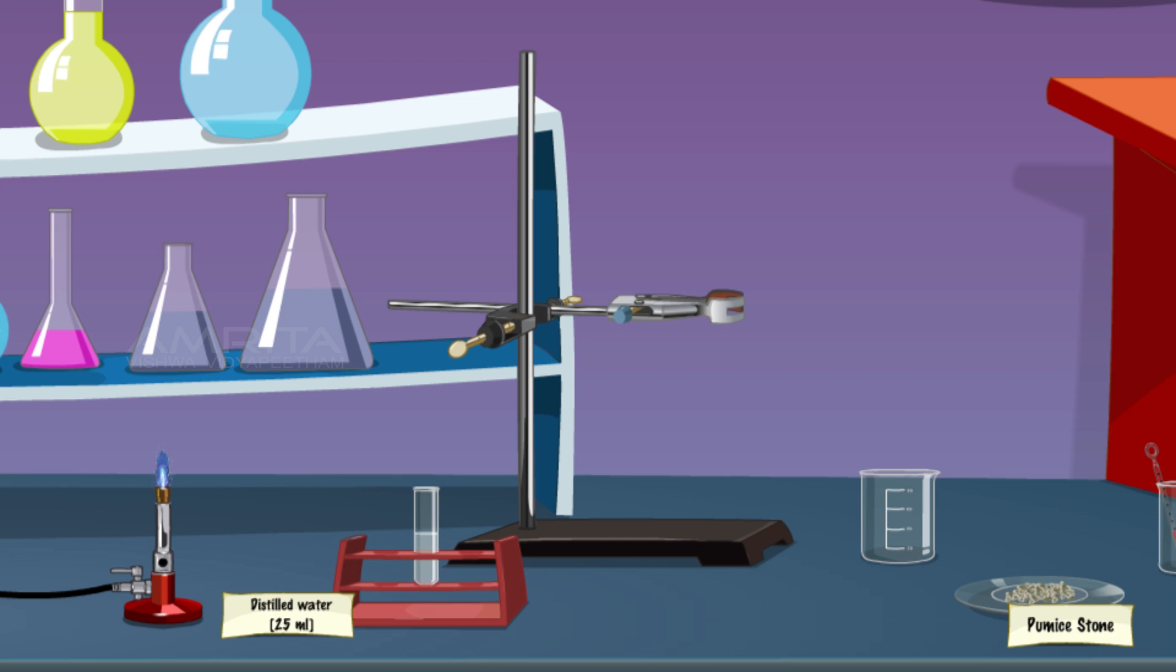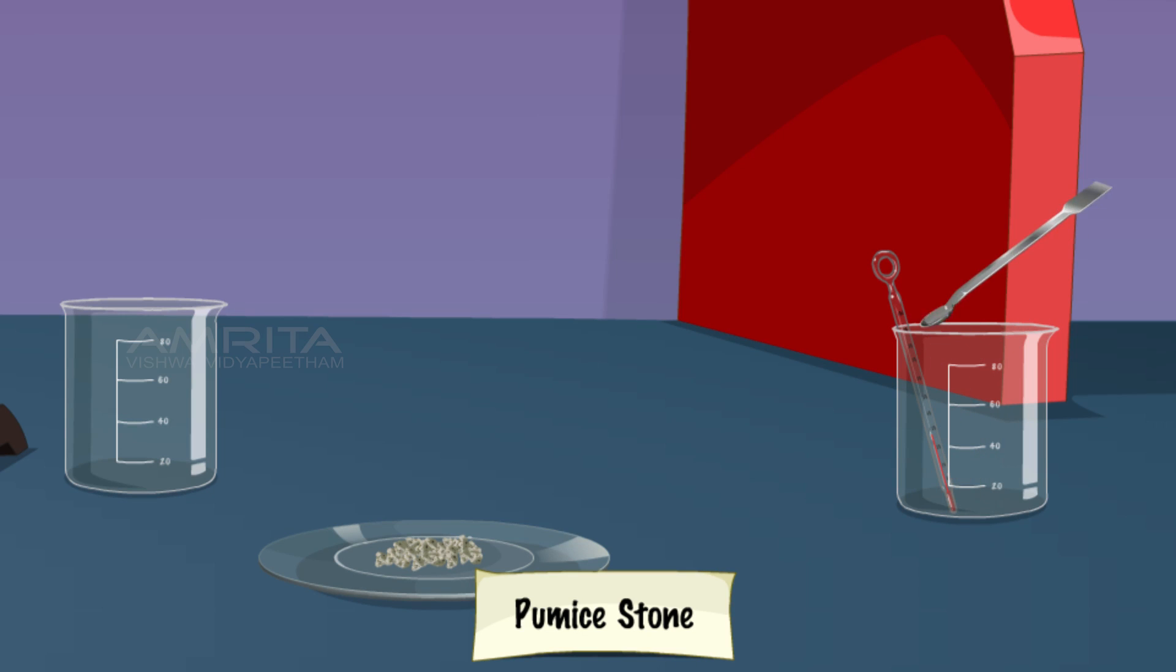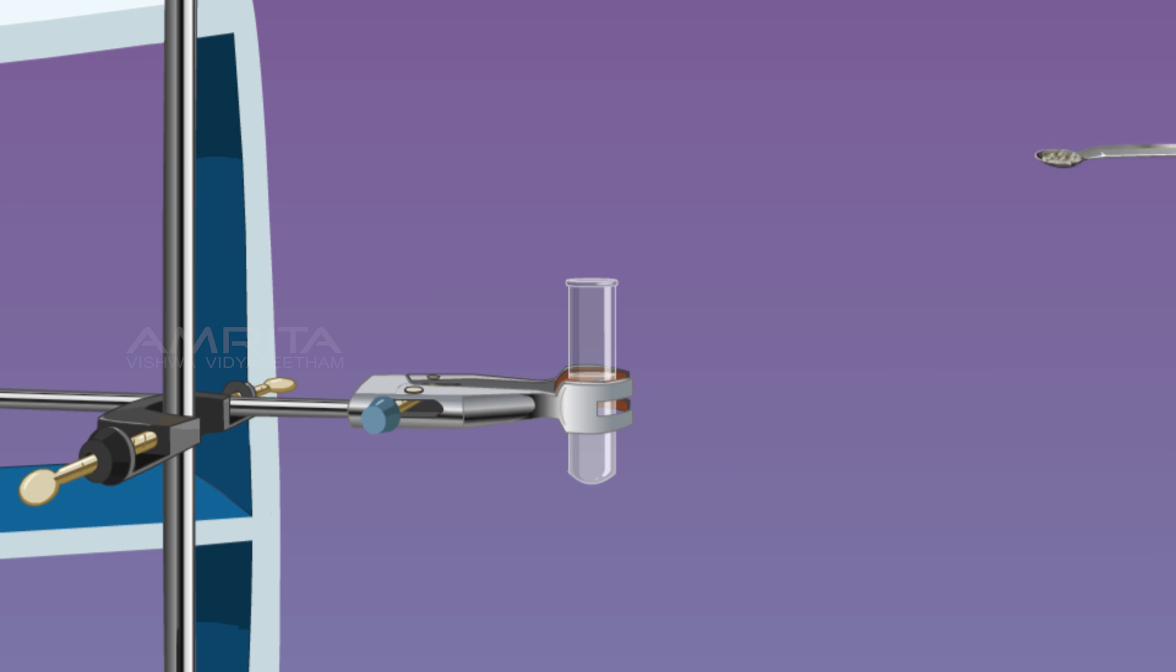Take about 25 ml of distilled water in a boiling tube and clamp it to the stand. Take a few pumice stones using a spatula. Put them into the boiling tube containing distilled water to avoid bumping while boiling.